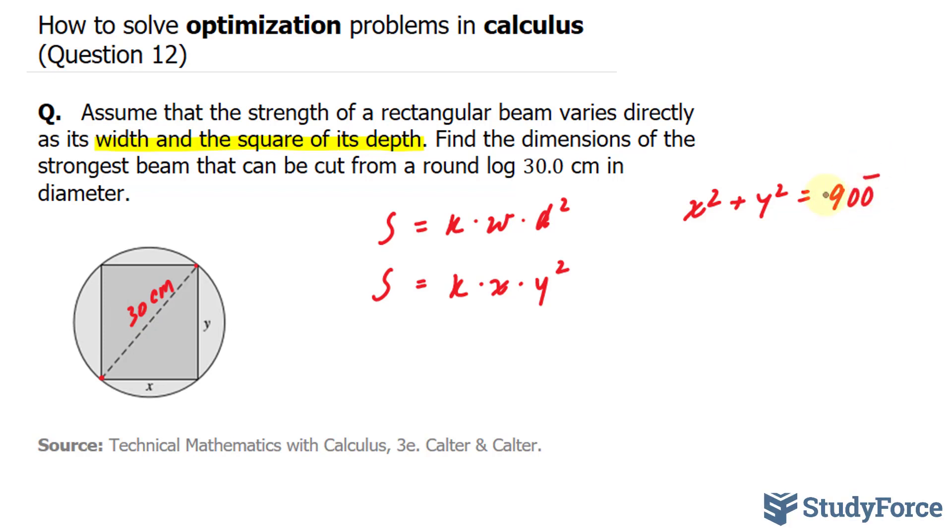Now I've placed a line on top of that zero because we are working to three significant figures. And if I don't place that line, then it's assumed that this 900 is one significant figure. Next, what I'll do is isolate for y squared and substitute the content for y squared into my main equation that provides the strength of the beam.